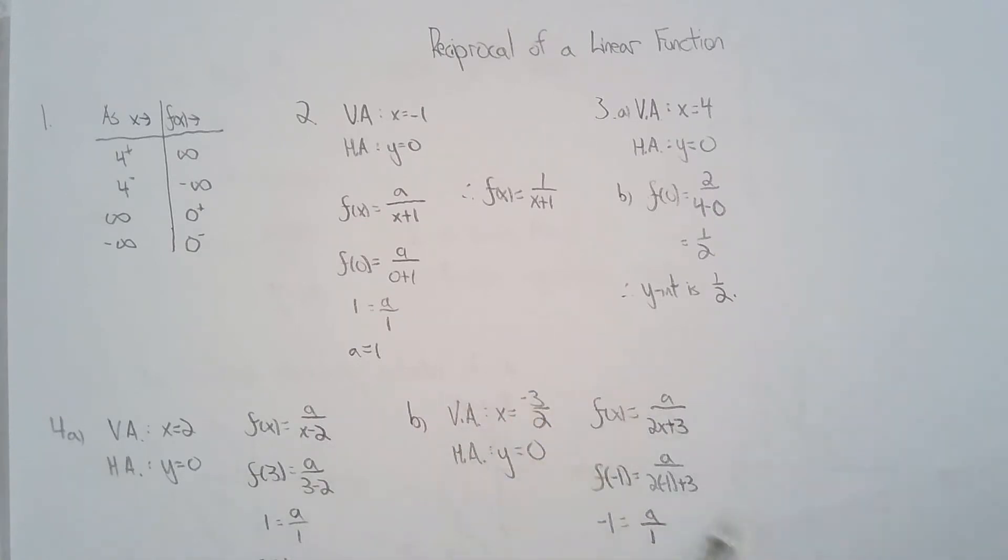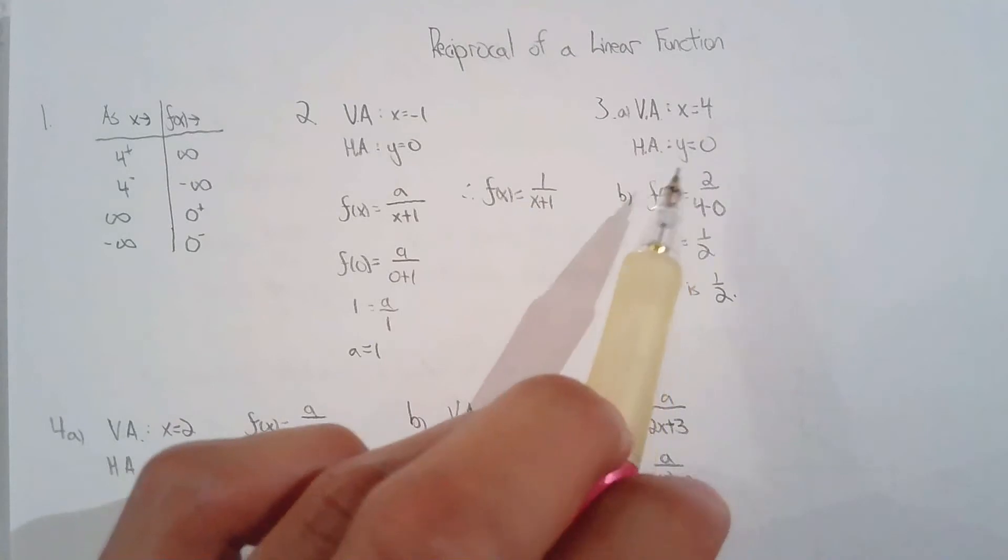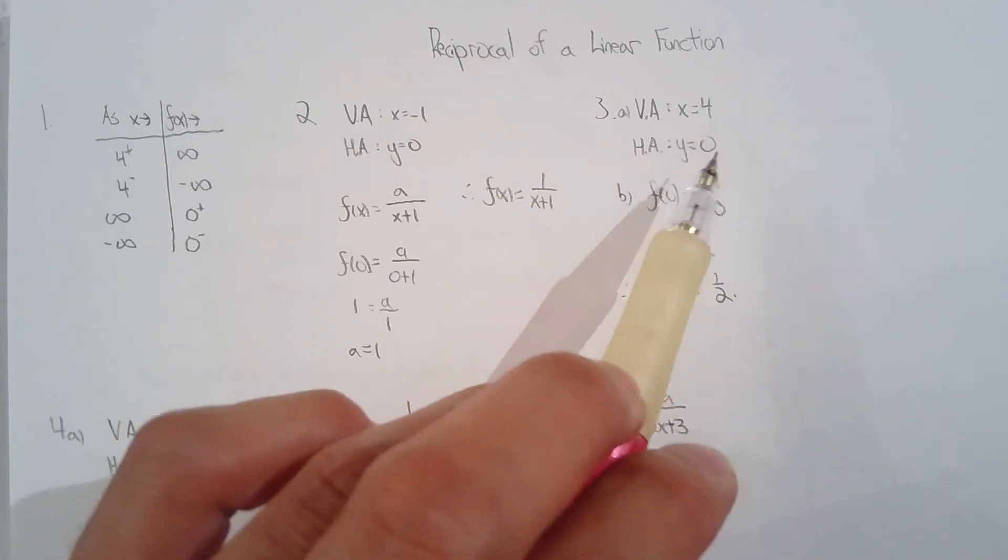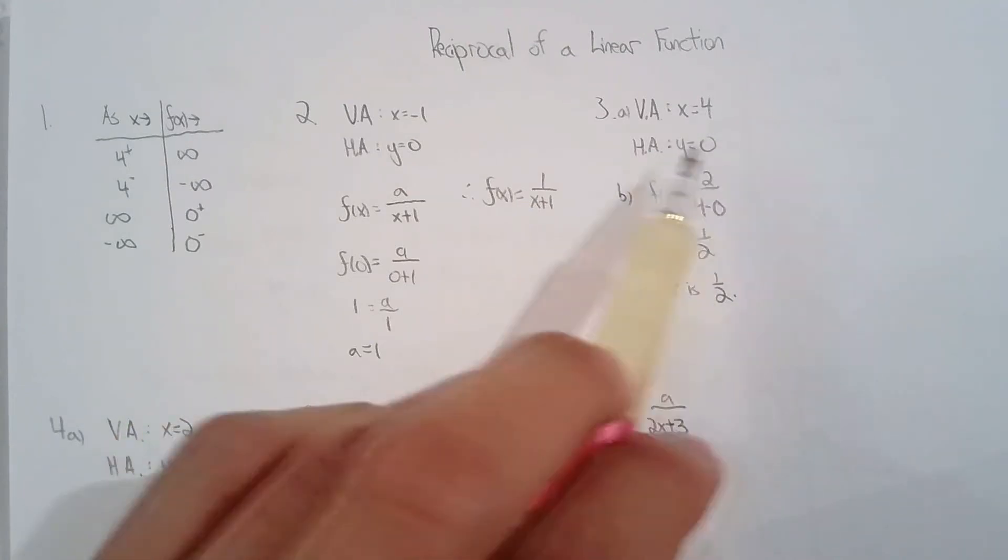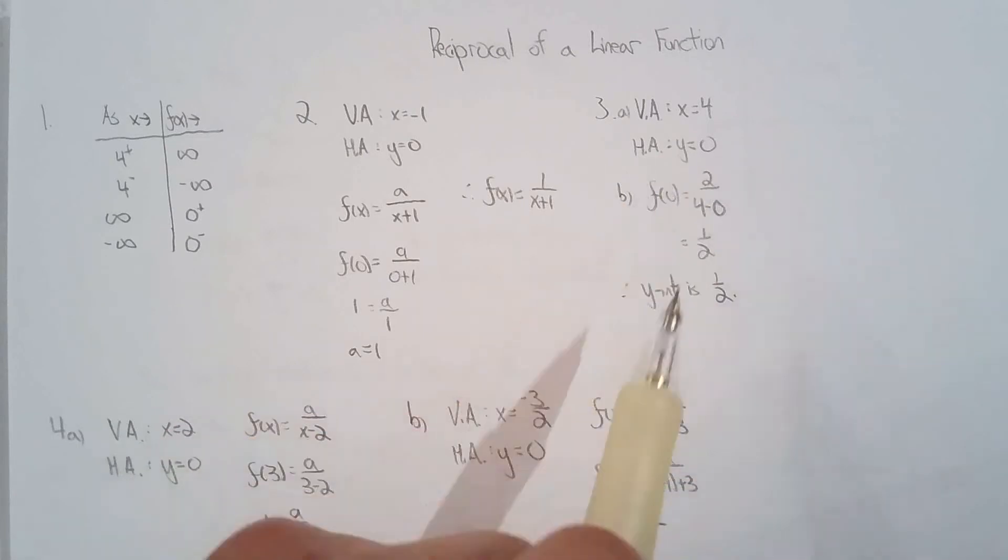For three, they wanted me to find the equation of asymptotes and find the y-intercept. So that was just some pretty basic algebra. I found the zero. And remember for horizontal asymptotes, the reciprocal linear function always has a horizontal asymptote of y equals zero. Now y-intercept is easy, just find f of zero.